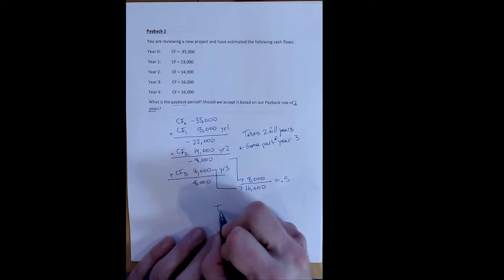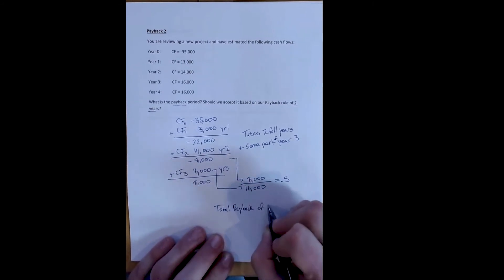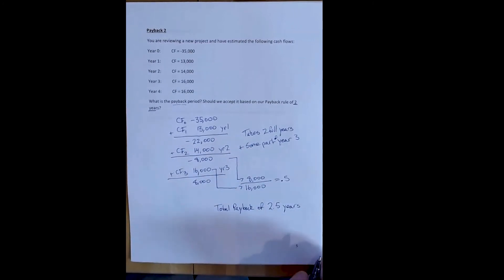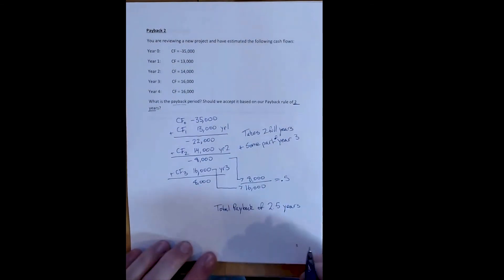So it took a total payback of 2.5 years, or two years and six months. But our payback rule says we reject any project that takes longer than two years. So we reject this project because 2.5 is greater than two.